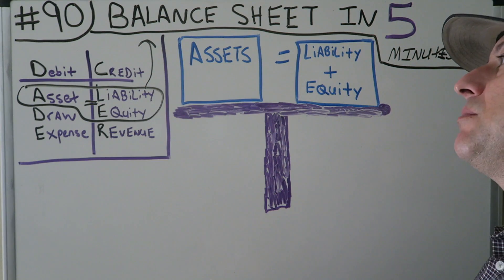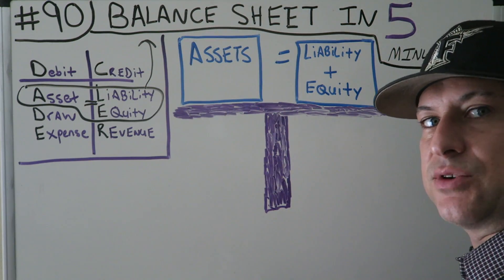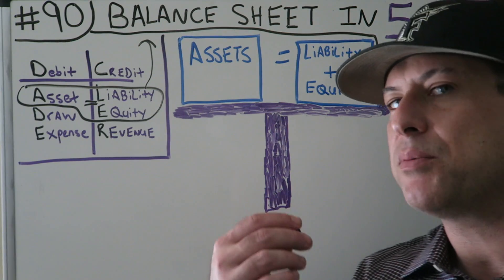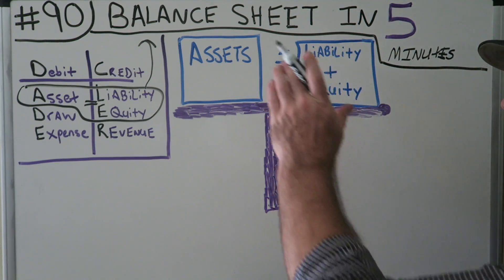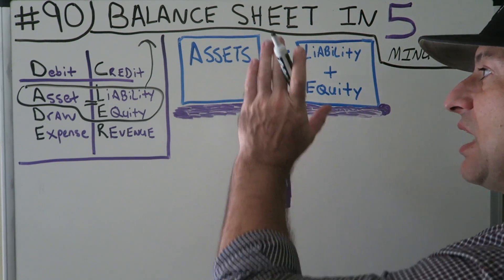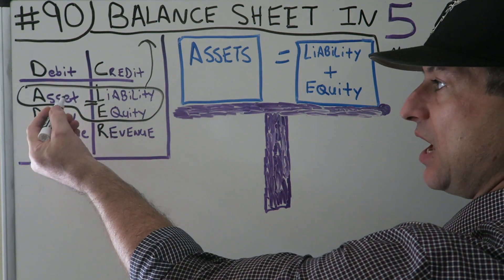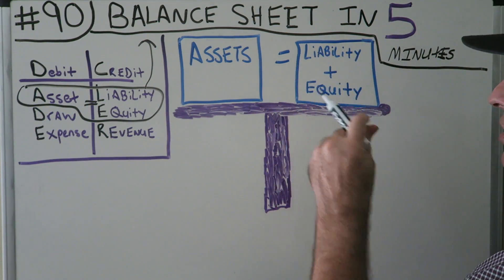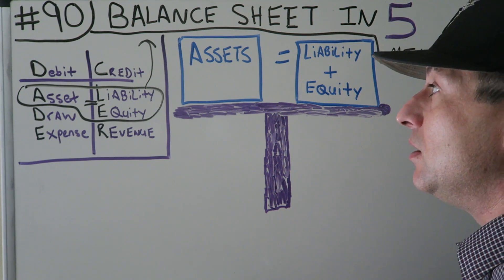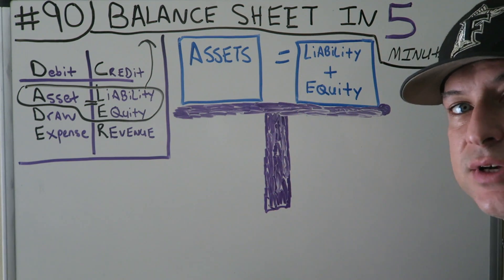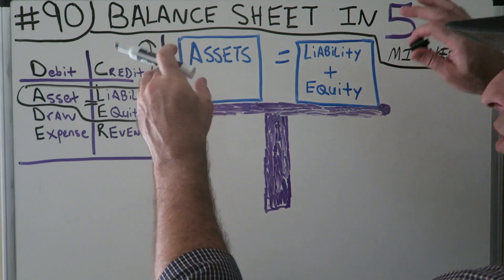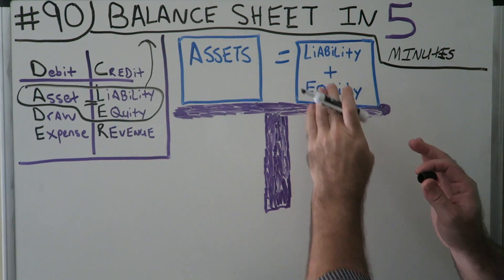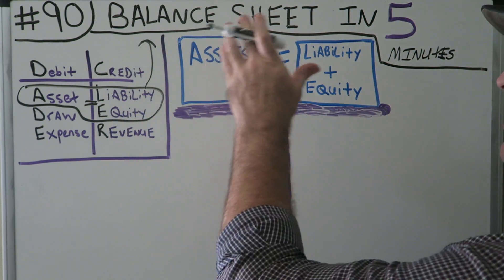Now let's just think about that. It balances, right? The name of it is balance. So if you can remember what each side of it is: one side is assets, and the other side is liabilities plus equity. That means you know both sides — one is assets, the other is liabilities and equity, and they balance.